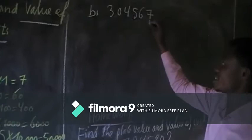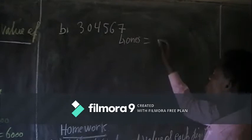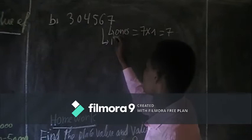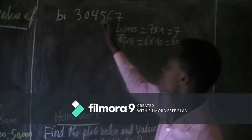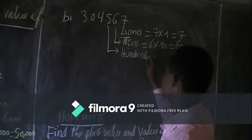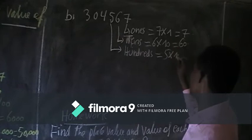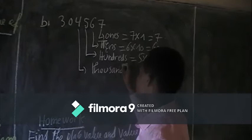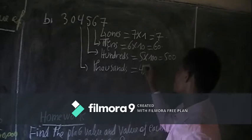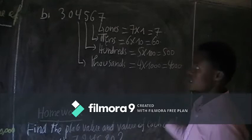Now let's move on to number two, or number B. This number is one. The value: seven times one gives us seven. Next, the tens place: find the value — six times ten gives us sixty. Next, hundreds: take the value times one hundred, which gives us five hundred. Next is thousands: take four times one thousand, giving us four thousand.